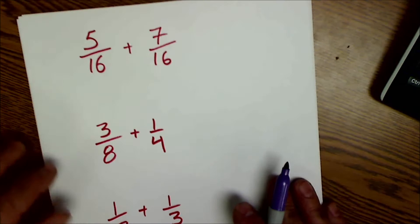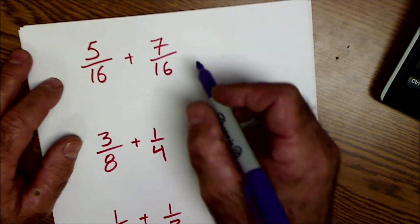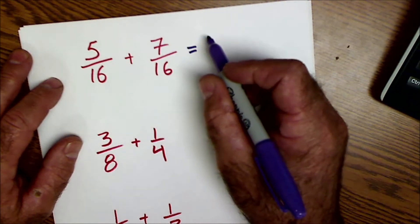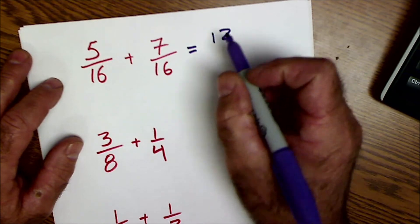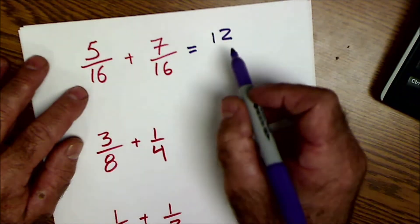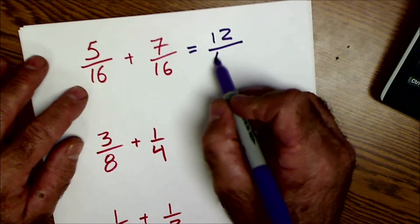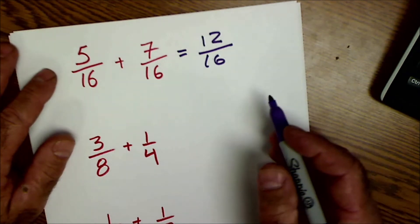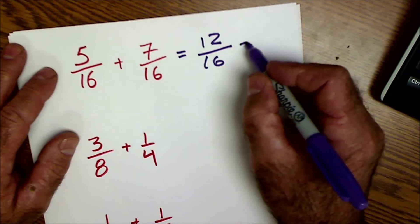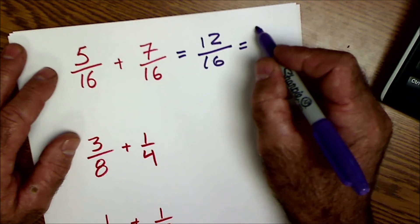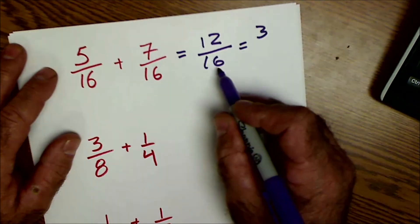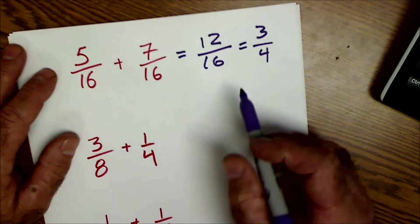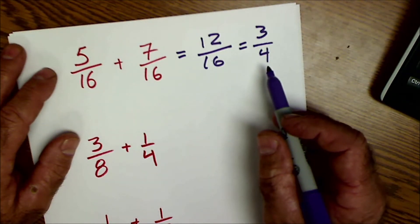Scenario one: the bottom number is already the same. I add across the top — five plus seven is twelve — and keep the bottom number sixteen. I can reduce that: four goes into twelve three times and four goes into sixteen four times, so it reduces to three fourths.